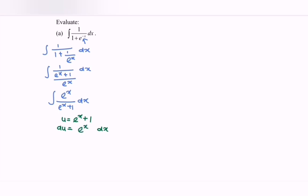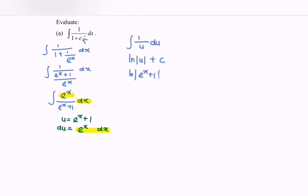Differentiate the 1 and we have 0. So kindly substitute the situation. Notice that we have e to the x dx which is equal to du. So rewrite the situation: integrate 1 over u with respect to u. So integrate 1 over u and we will have ln|u| plus c. So substitute u back: ln|e to the x plus 1| plus c.